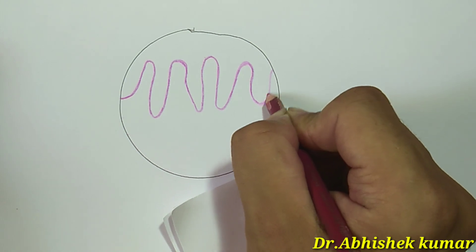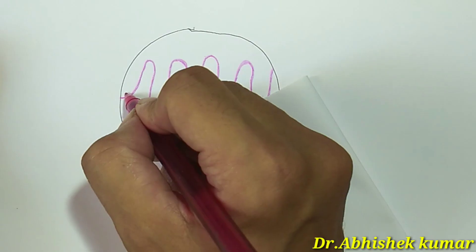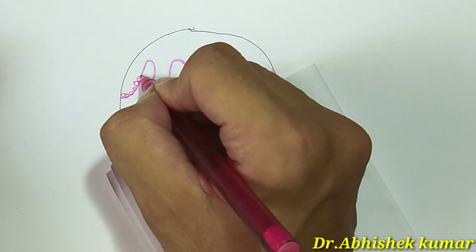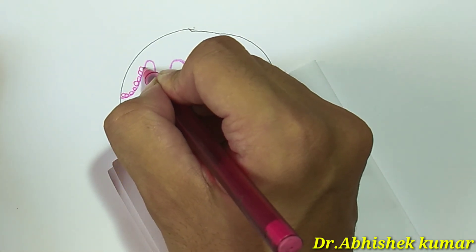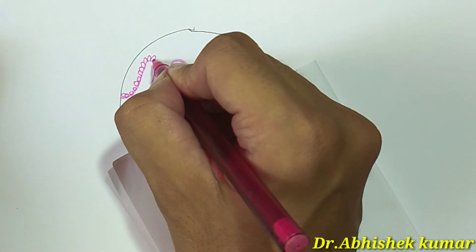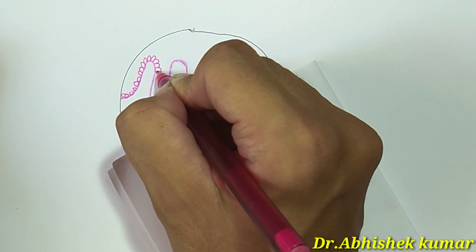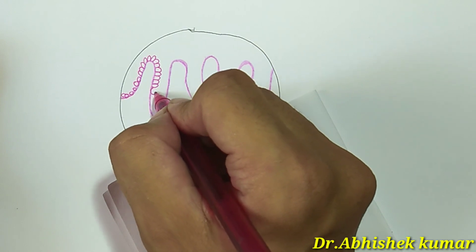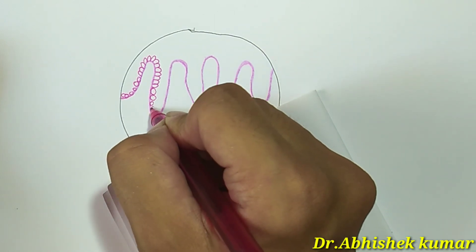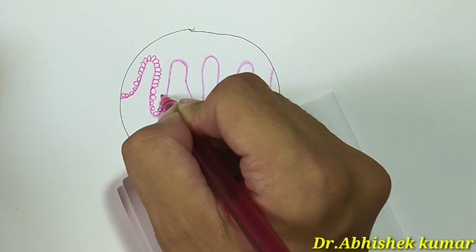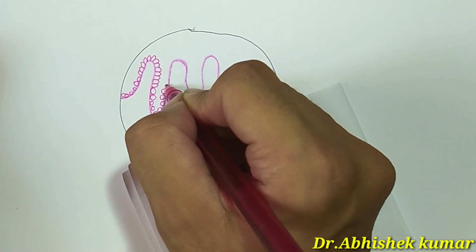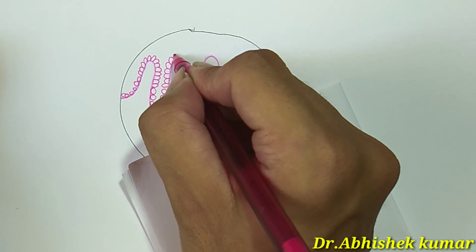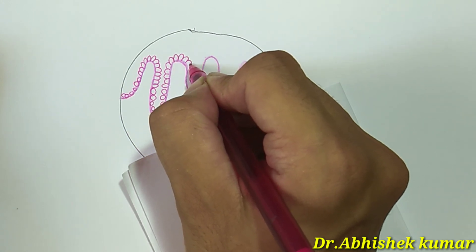The mucosa shows longitudinal folds when the stomach is empty, called rugae, which disappear when the stomach is expanded. When we intake food, the rugae will disappear.